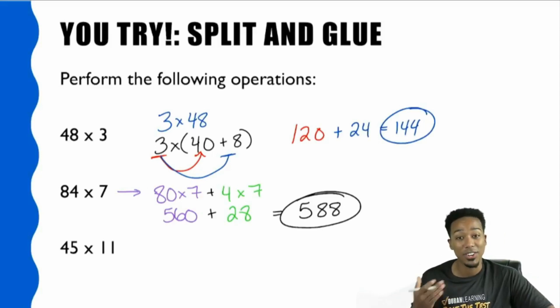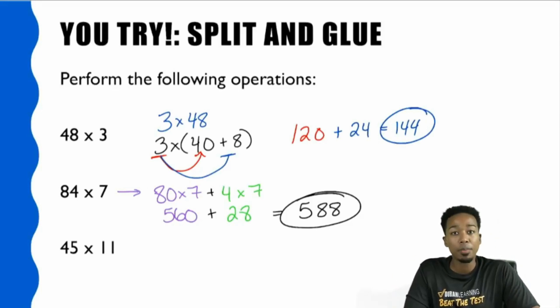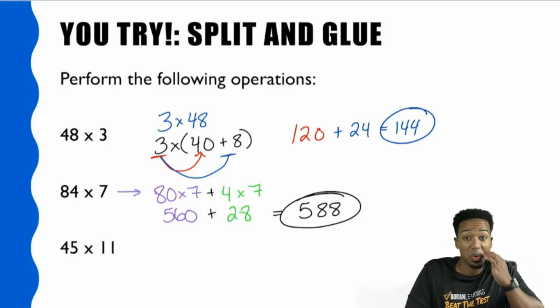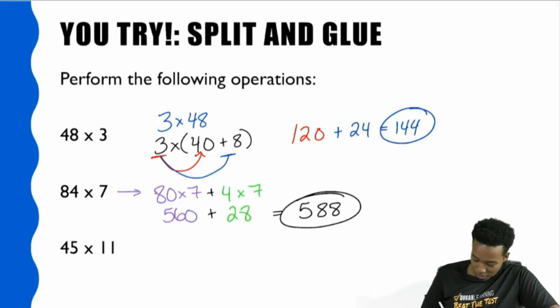You are more than capable of doing it. With this last one here, 45 times 11, still going to work. I can do 45 times 10 and 45 times 1. Now you're looking at that and you're saying, whoa, they're both two digits. It can still work. 45 times 10 is 450. 45 times 1 is 45. So the answer is going to be 495. Done. Let me prove it to you.